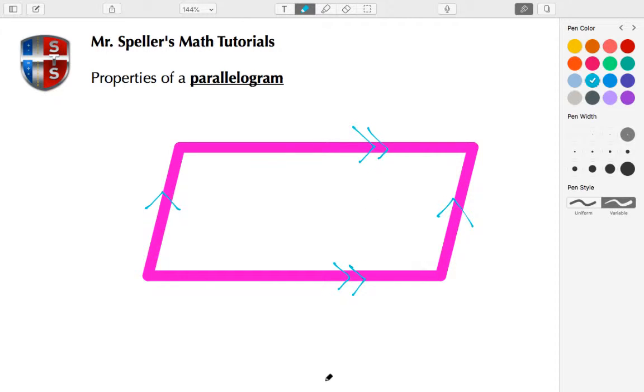We also know that the length of the top is congruent to the length of the bottom, so single tally marks. We know the length of the left-hand side is congruent to the length of the right-hand side, we're going to use double tally marks.